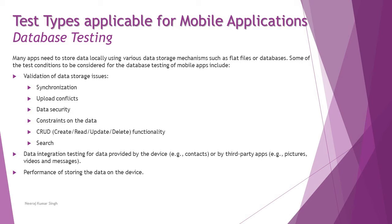Search is a very common function that interacts directly with the database and returns output based on the criteria made. Another point is data integration testing for data provided by the device — for example, context, or by third-party apps like pictures, videos, and messages — so the app should be able to interact with and access all this information. Also important is performance of storing data on the device: how long it takes to store information, and how long it takes to return query results when a user searches for a particular item.